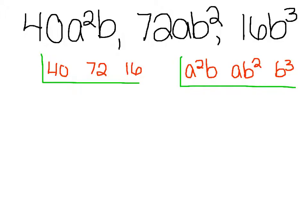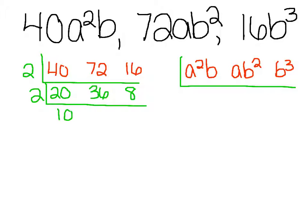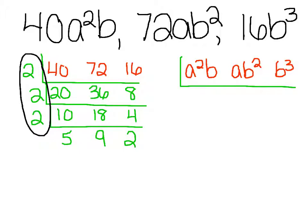Starting with the numbers — pause and try it on your own. We start with 2: 40 divided by 2 is 20, 72 divided by 2 is 36, 16 divided by 2 is 8. All even again, so 2 works: 20 divided by 2 is 10, 36 divided by 2 is 18, 8 divided by 2 is 4. Still all even: 10 divided by 2 is 5, 18 divided by 2 is 9, 4 divided by 2 is 2. We have two prime numbers, so we stop. The GCF for the numbers is 2 times 2 times 2, which is 8.